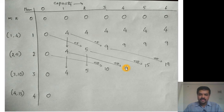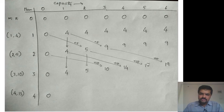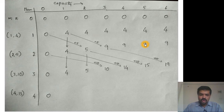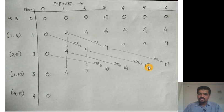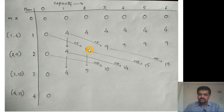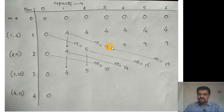For f(3, 5): either 9 (third item not chosen) or 10 + f(2, 2) = 10 + 5 = 15. So 15 is the solution. To clarify: when the third item is chosen with capacity 5, its weight is 3, leaving capacity 2. With that remaining capacity and the first two items, the solution is f(2, 2) = 5. So 5 + 10 = 15. For f(3, 6): either 9 or 10 + f(2, 3) = 10 + 9 = 19, so the value is 19.